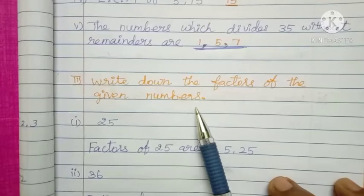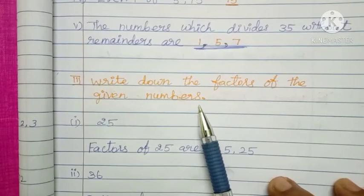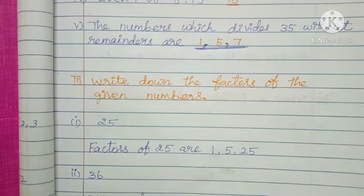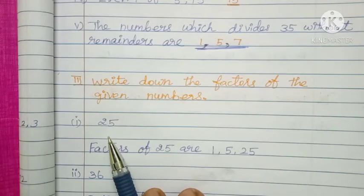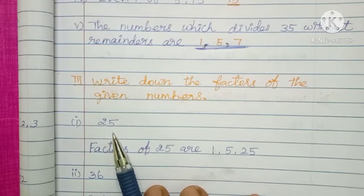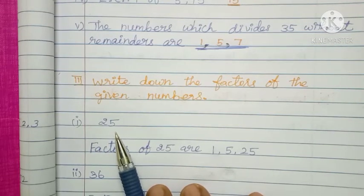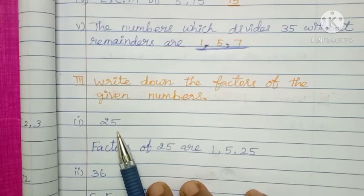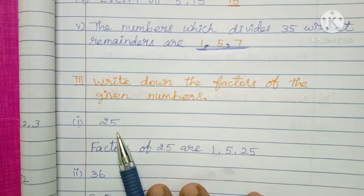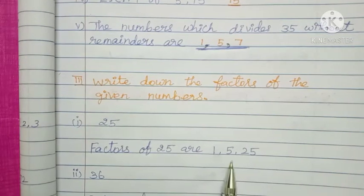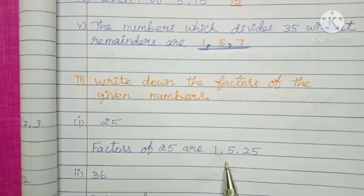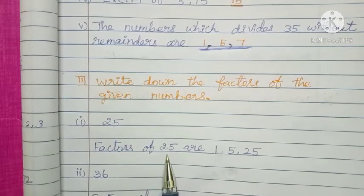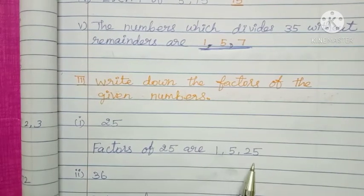Write down the factors of the given number — you already learnt the factors. Factors means use the table. The given number is 25. 1 table is coming; 2, 3, and 4 tables are not coming; 5 table is coming — 5, 5's are 25. Then 25 table. What tables come for 25? That is called factors.